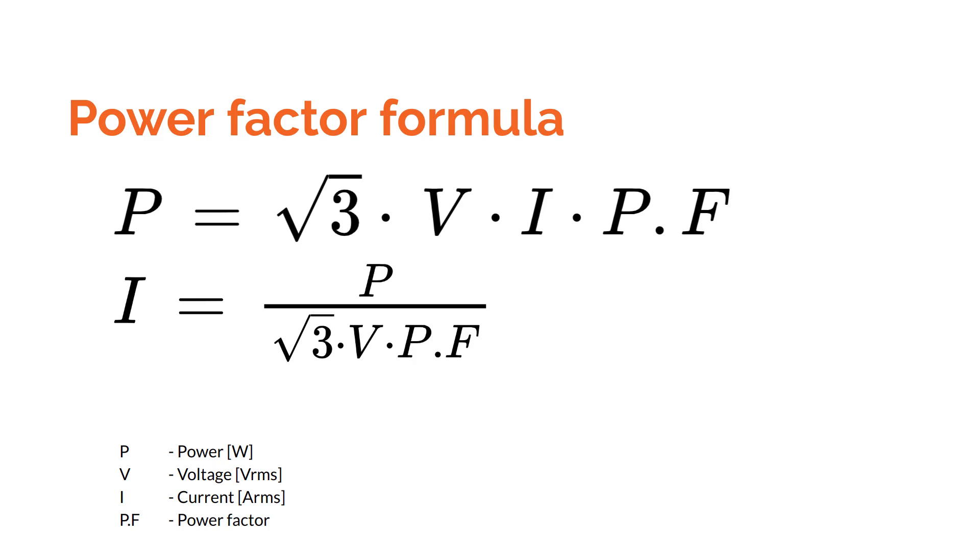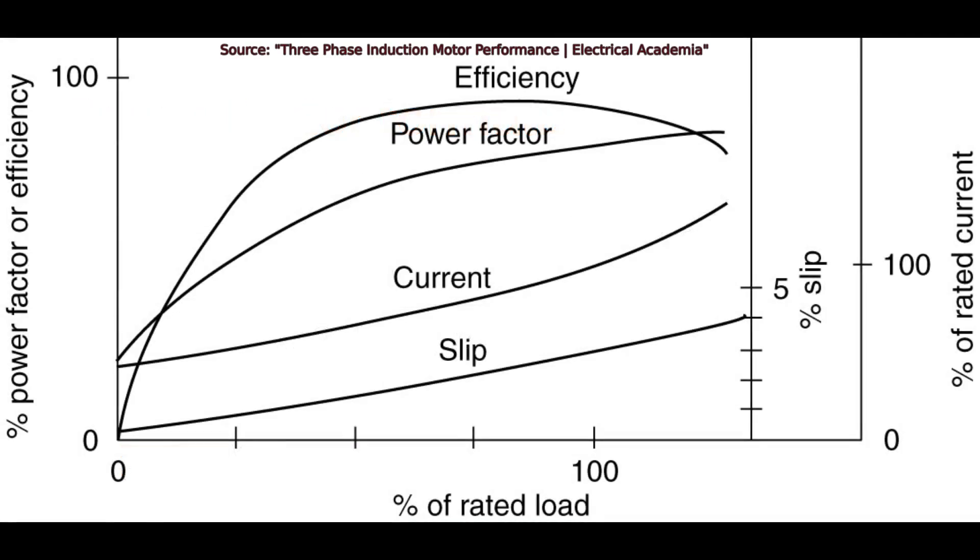This might seem a bit counterintuitive. So, here's a graph which gives an idea of how each parameter changes at different loads, after the motor has reached steady state, meaning no transients. We can see that the lower the load, the lower the current, despite having a lower power factor.